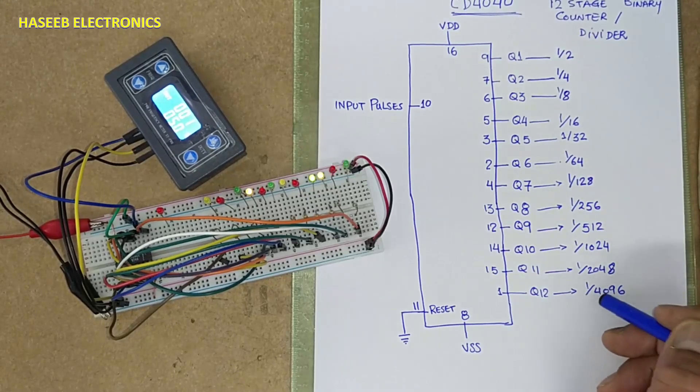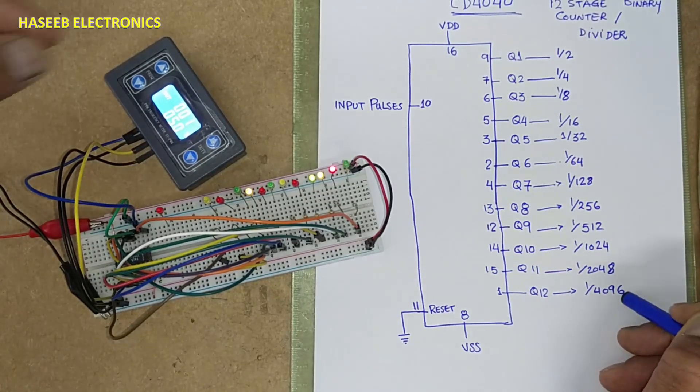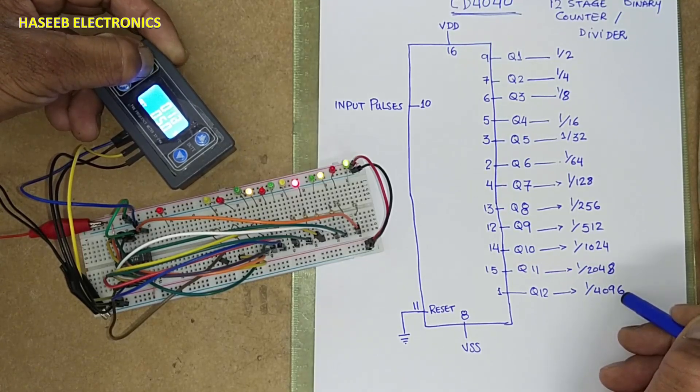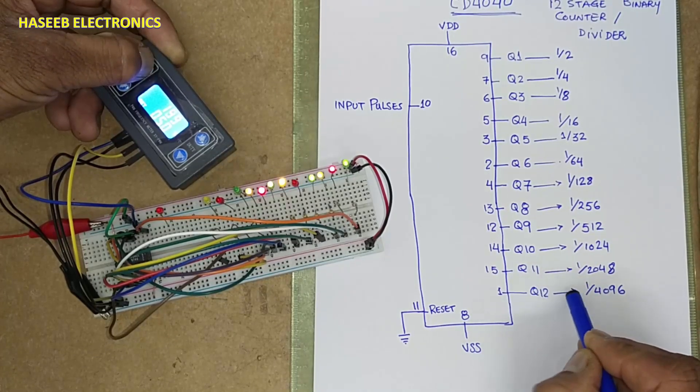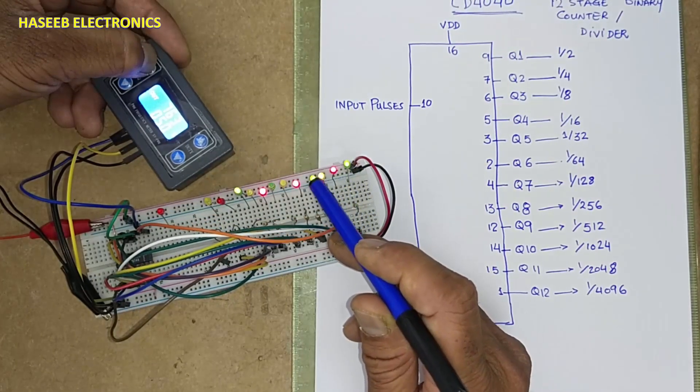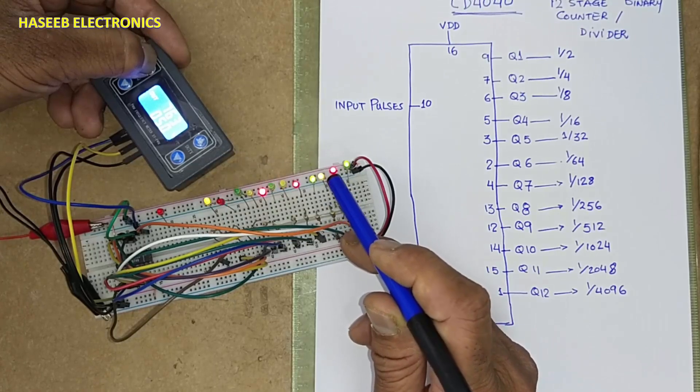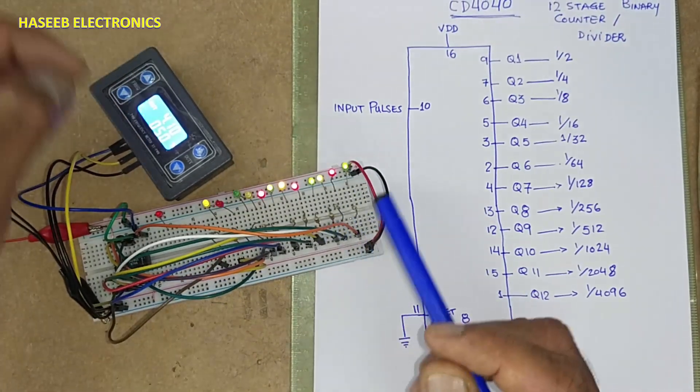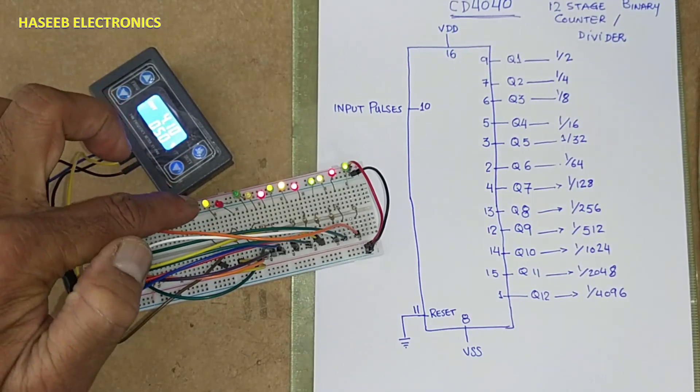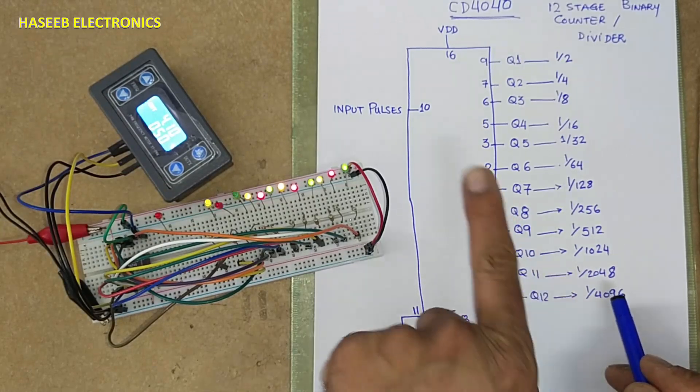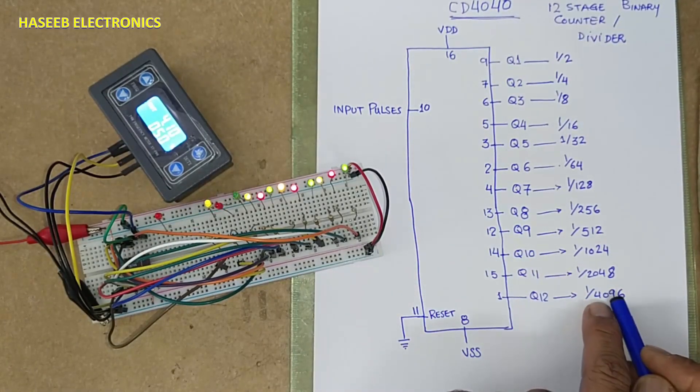And if I will provide 4096 hertz, we will receive 1 hertz at this point. This time, these LEDs are blinking so fast that we cannot observe with normal eye. 4.1 kilohertz. And if we see, this blink rate is now 1 hertz. Because this time, we are receiving input frequency divided by 4096.